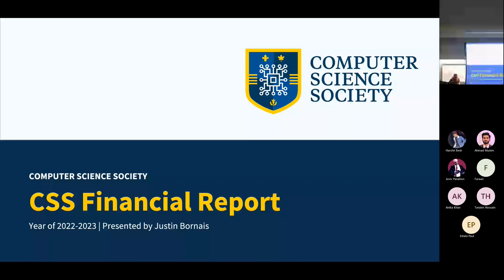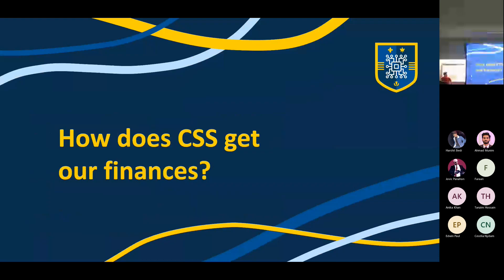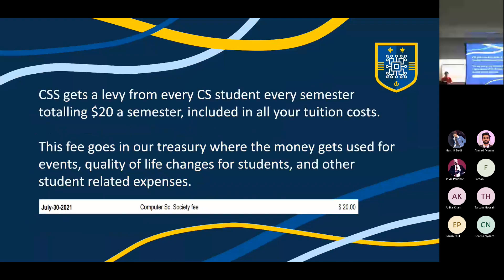Now for the financial report. I'm Justin Borney, treasurer of the Computer Science Society. First, how does CSS get its finances? Every semester that you attend class, each student has a $20 per semester fee that goes towards Computer Science Society fees. That money gets used for events, quality of life improvements like the microwave, and other student-related expenses.